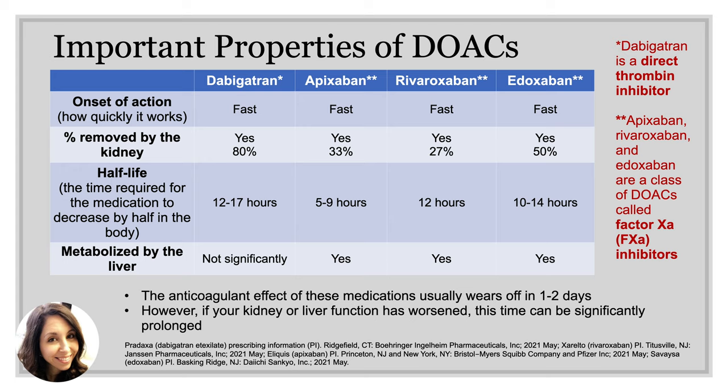Many of these bleeds can be managed outside of the hospital simply by holding a few doses of medication and possibly taking some supportive care measures. It's important to note that all of these drugs are impacted by the kidneys, and that the factor Xa inhibitors are all metabolized by the liver. This means that if you develop kidney or liver problems, these medications are going to take a little bit longer than that typical one to two days to clear out of your system.